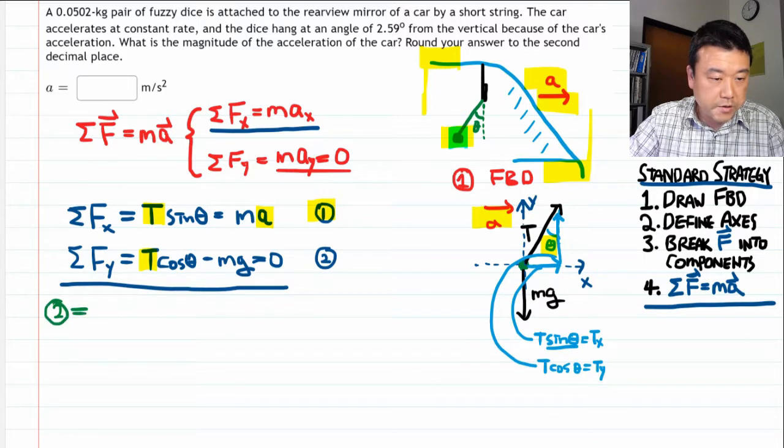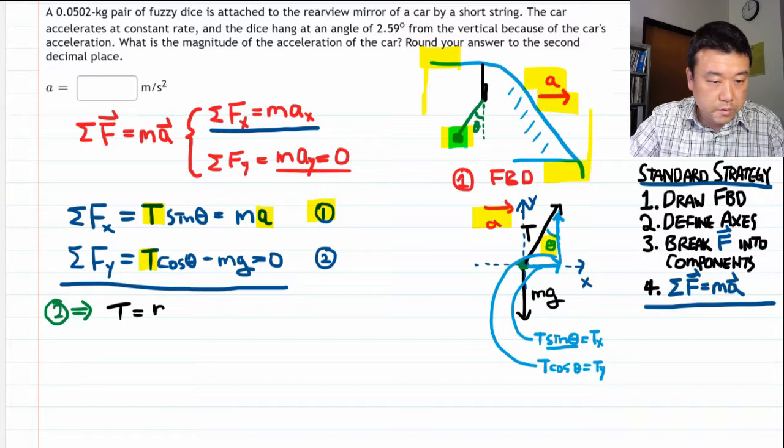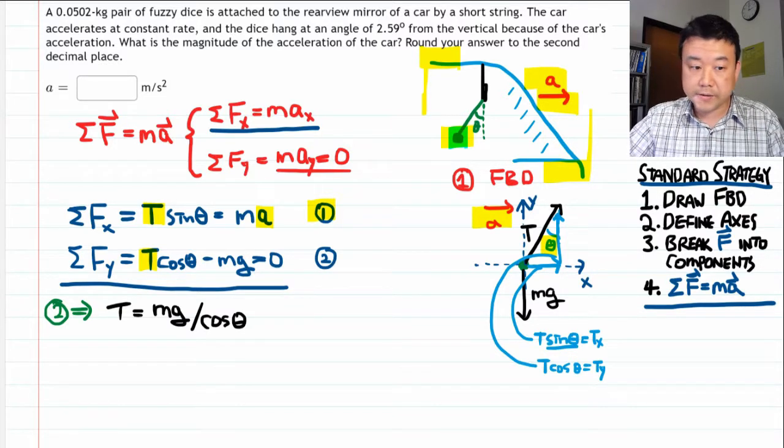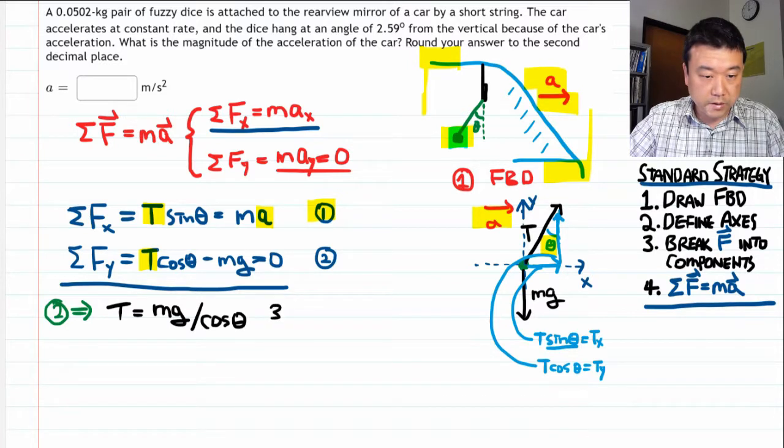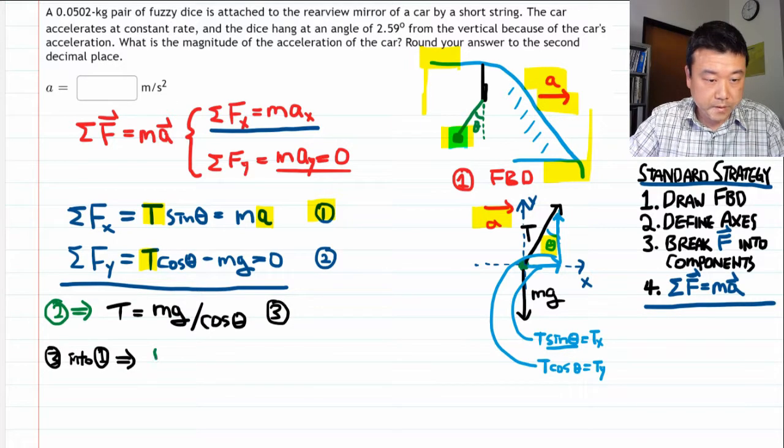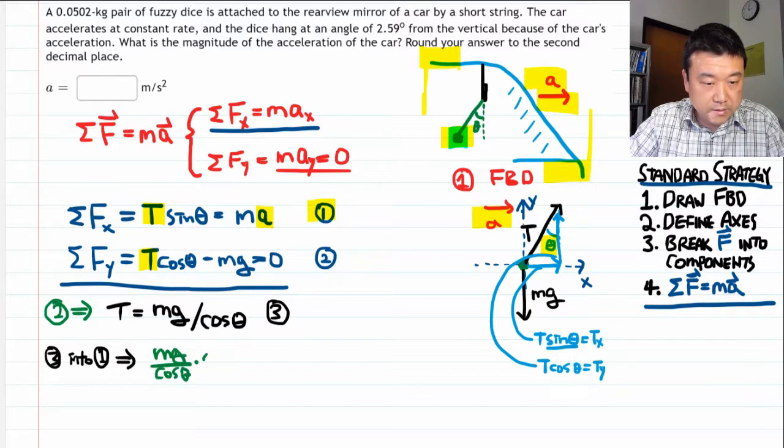From equation two, I'm solving for tension. And we get tension is equal to mg divided by cosine theta. All right. We are using the substitution technique. So let's call this equation three. And we are going to plug this into equation one. And this yields mg over cosine theta times sine theta is equal to ma.